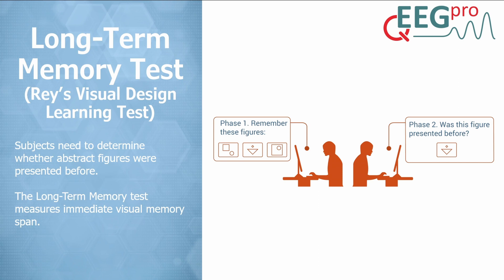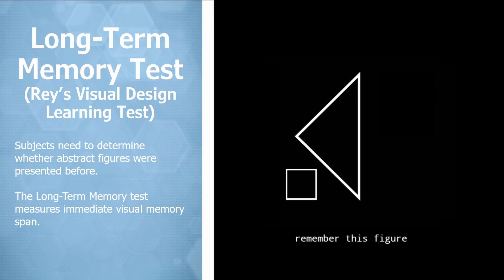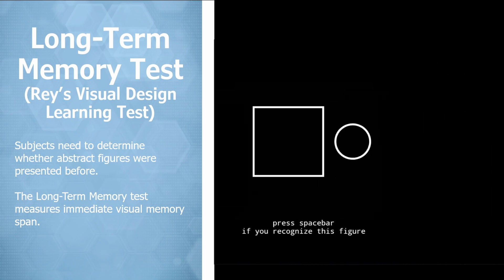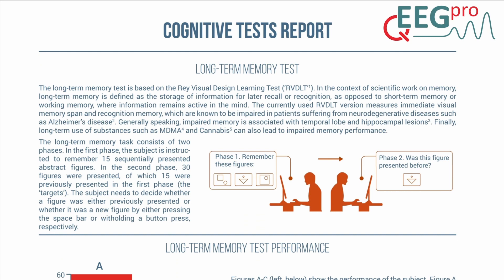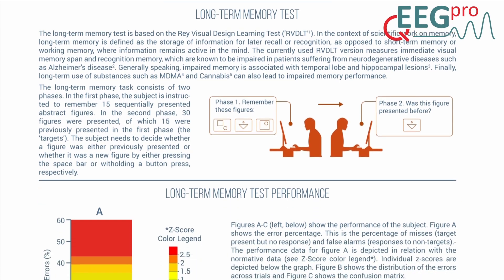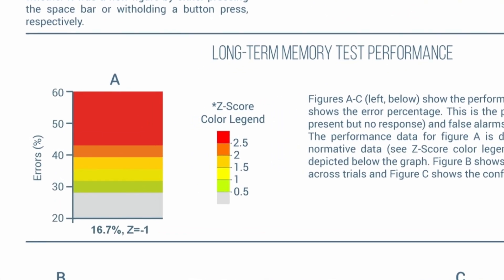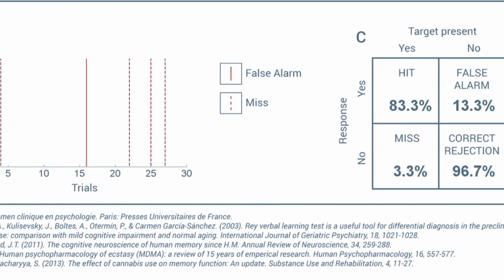Let's have a look at part one of the long-term memory test, where subjects need to try to remember the abstract figures presented on the screen. Now let's have a look at the second part of the test, where subjects are instructed to press the space bar when they recognize a figure. On the results page, the primary outcome measure is the percentage of errors, depicted in Figure A. In this example, the error percentage was 16.7 percent, which corresponds with a Z-score of negative one. Figure B shows the distribution of false alarms and misses across trials, and Figure C shows the confusion matrix.